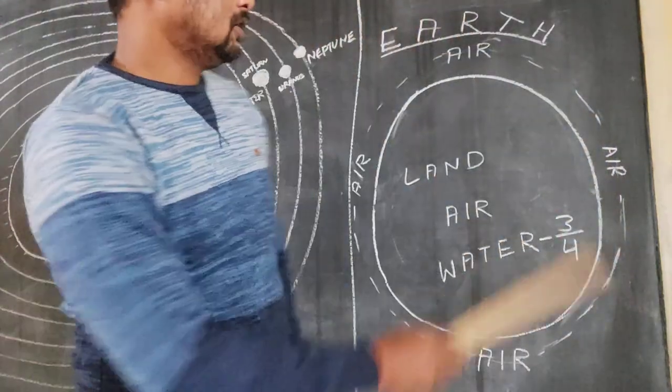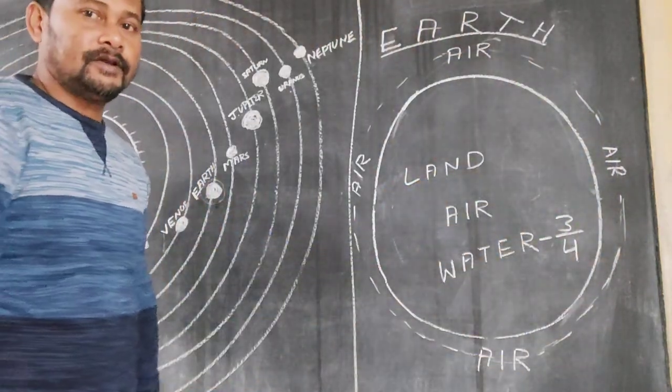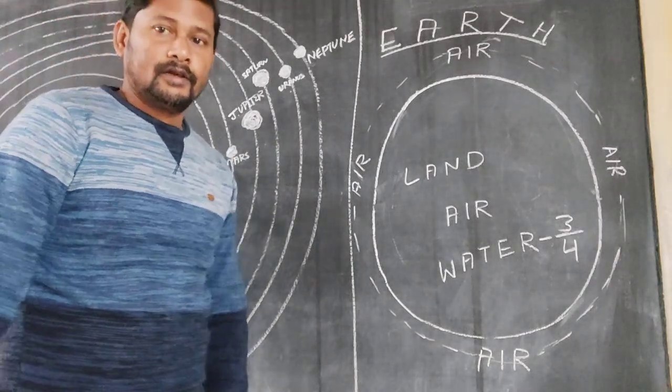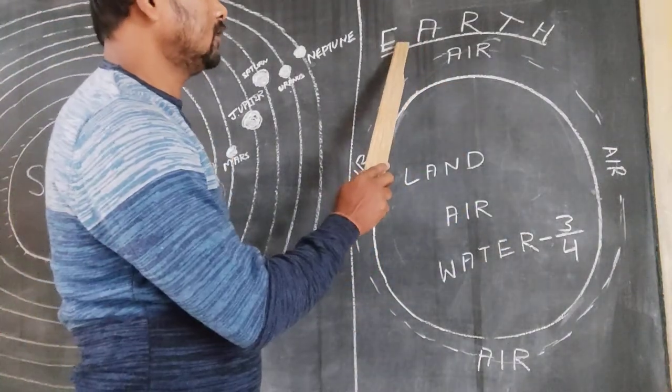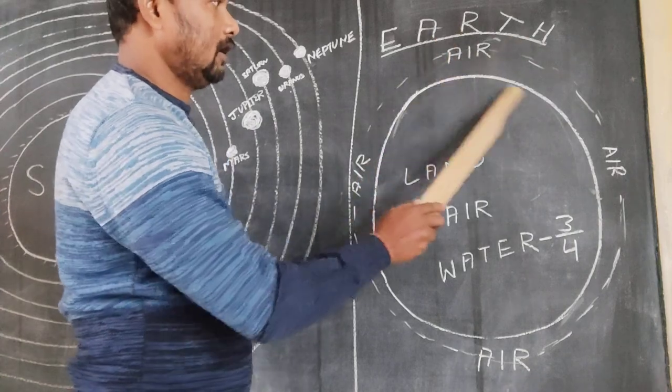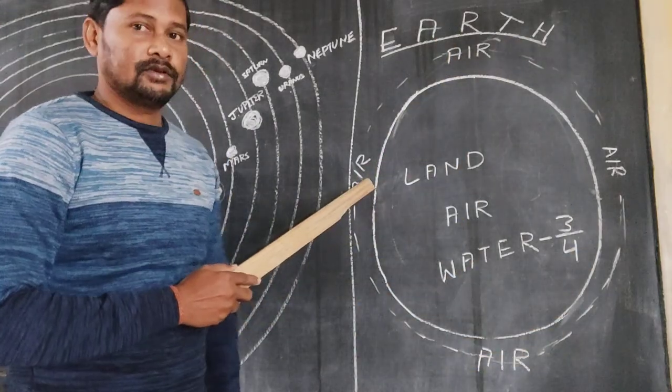Now, here in this diagram, I am going to explain you elaborately about the earth. Now you see, here it is written earth, and I have drawn the earth, you can see it here.